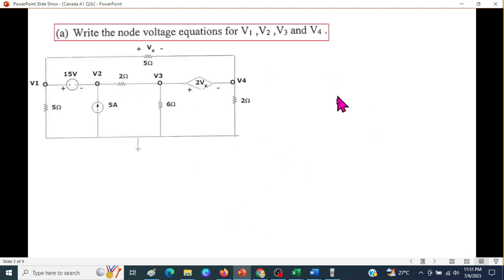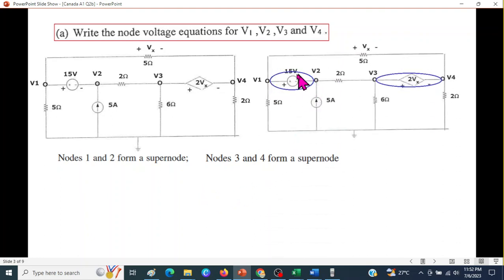Okay, so the first part, we have to write the voltage equations. Now, if you are familiar with the nodal equations, you can see that node 1 and node 2 form a supernode. A voltage source, whether independent or dependent, between two nodes makes the node supernode. So this is one supernode. And this here is also a voltage source, dependent voltage source, but this will also form a supernode.